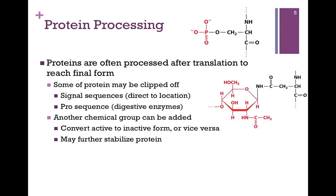Another important point about proteins is that they are often processed even after they're made. After initial synthesis, proteins may need to be processed to reach their final functional form. In some cases there are signal sequences on the end of the protein that direct it to a correct location within the cell, after which that sequence is clipped off. There are also pro sequences — true for digestive enzymes — that prevent activity until the enzyme is needed, at which point the pro sequence is clipped off.